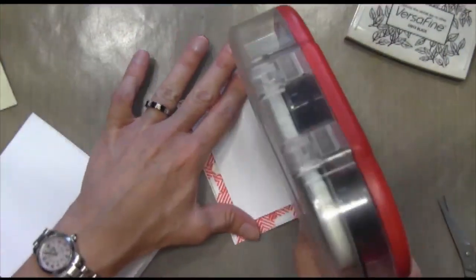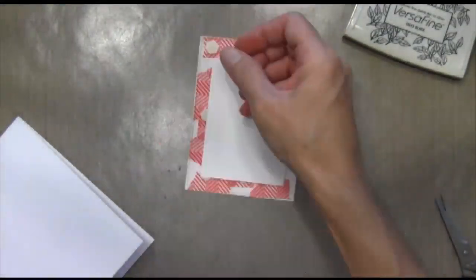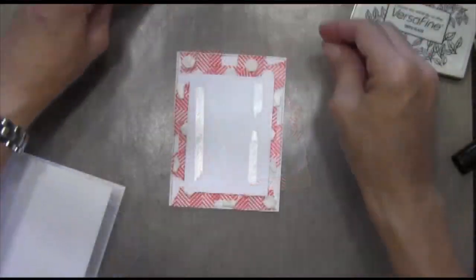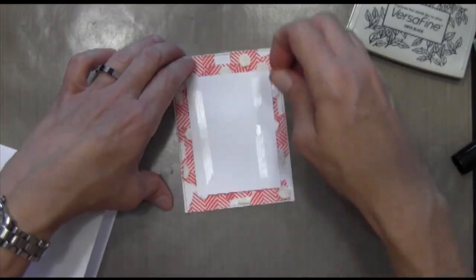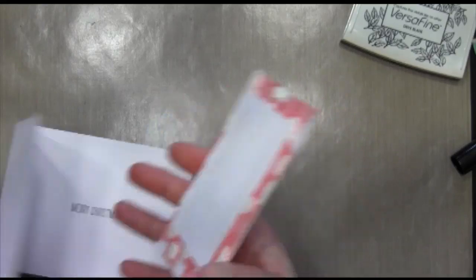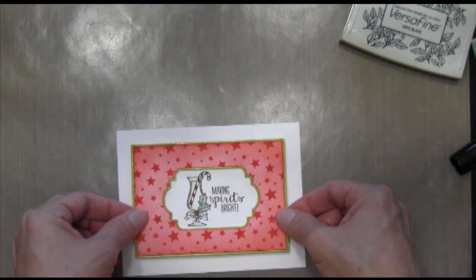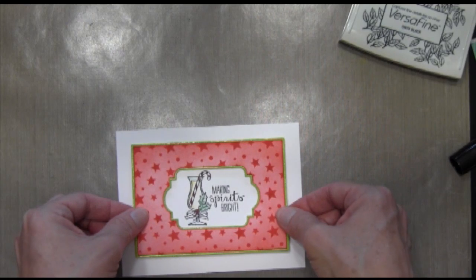When I flip it over, I'll use just a regular tape runner. Then I went ahead and filled in some dimensionals that weren't touching that piece, just to make sure I had it all popped up. I just have my card base, which is 4 1/4 by 5 1/2 inch folded, and I'm just going to adhere it to that.